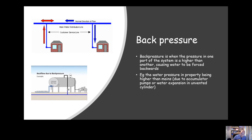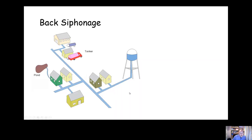A good example of back pressure would be an unvented hot water cylinder being fed from the mains. If it doesn't have a check valve on it, when that water heats up and expands it can cause water to be forced backwards in the pipework. So we should make sure we put a check valve on the cold supply to an unvented cylinder.